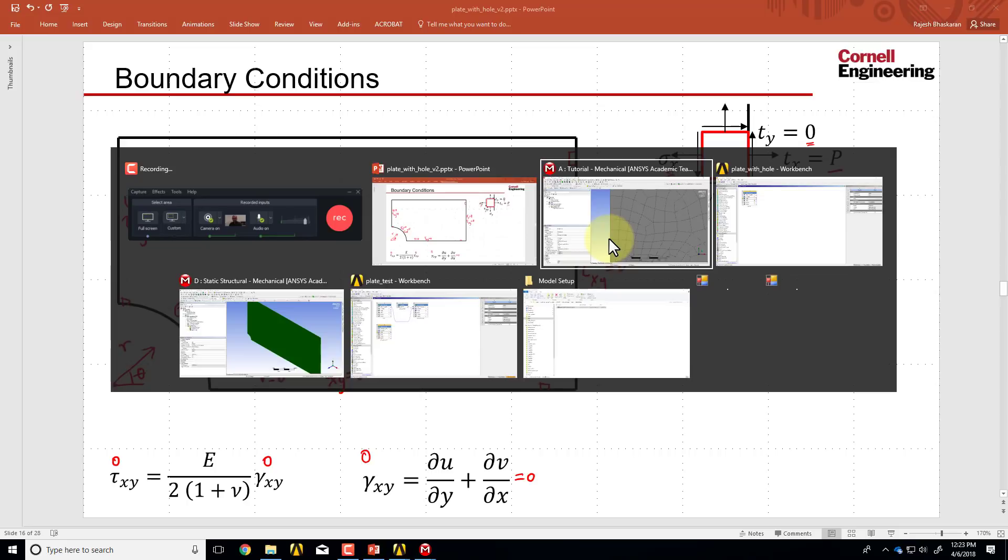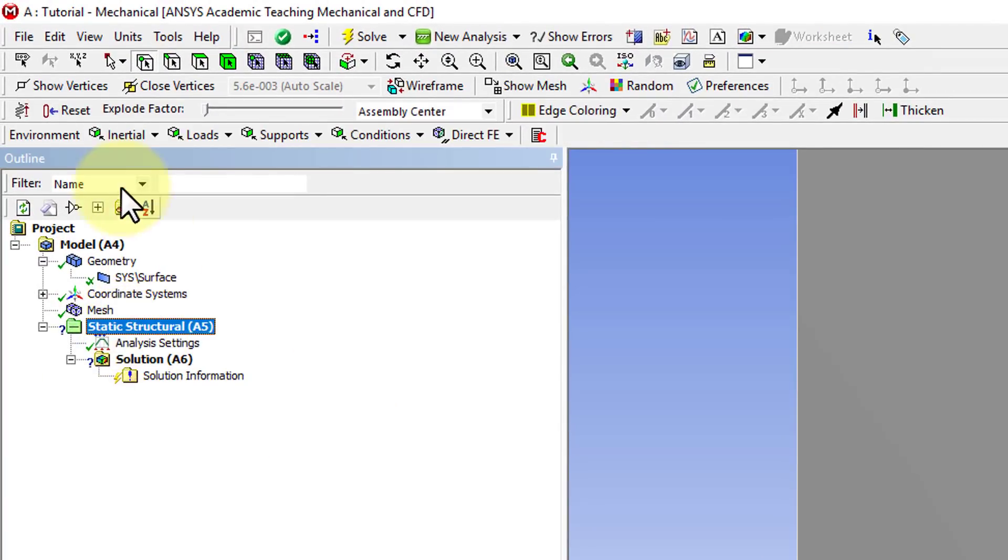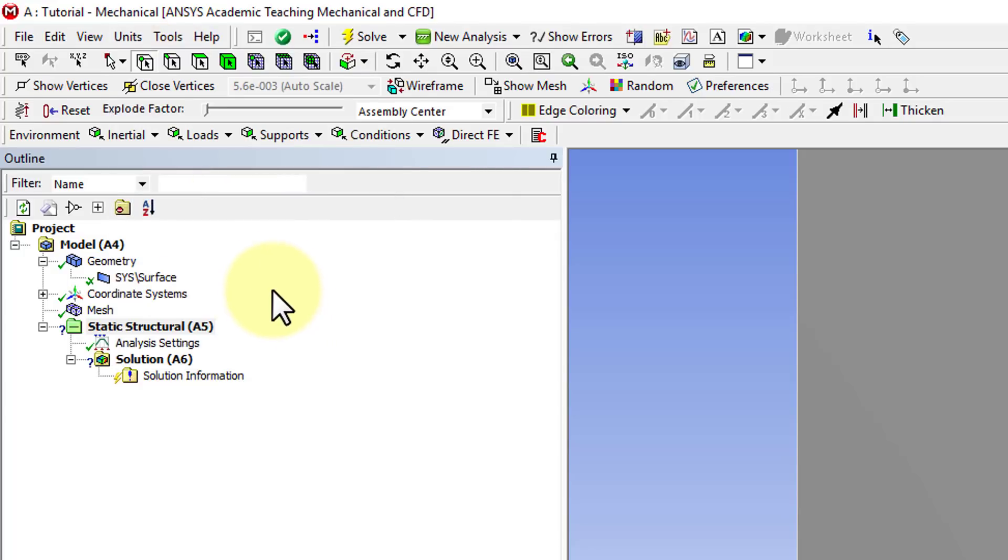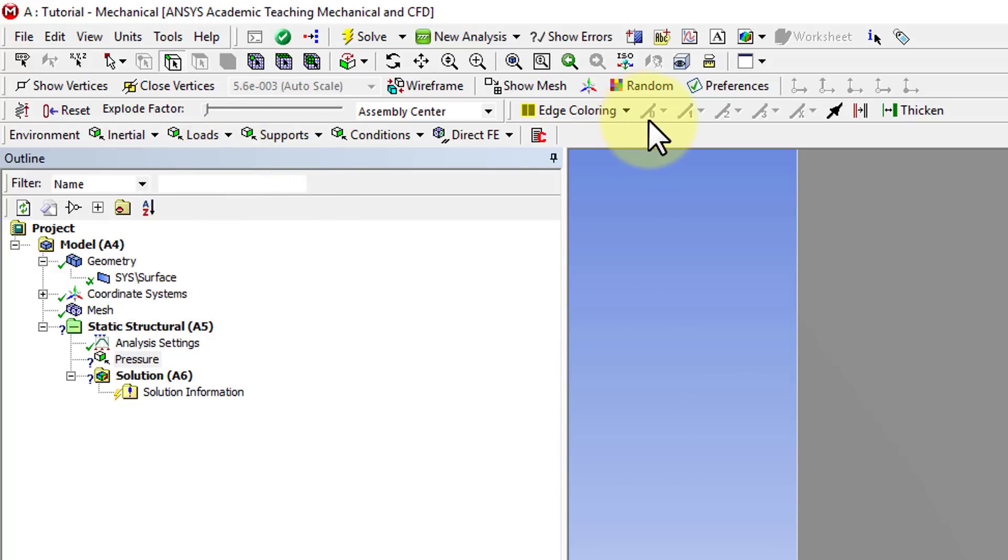So I'll go into mechanical and highlight static structural in the tree, and that gives me the boundary conditions and the body forces that I can put. And I'll start with loads, and before that, let me make sure that the units are U.S. customary. It might be metric by default. So select the right units, and then go to loads, pressure. And I need to select the right boundary, so I'll zoom out here using zoom to fit.